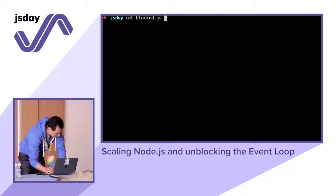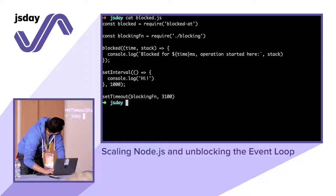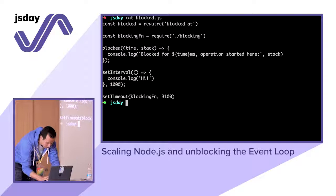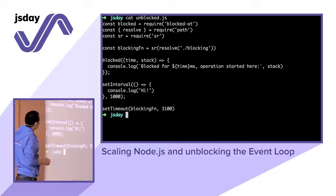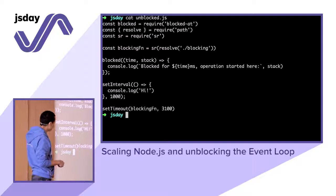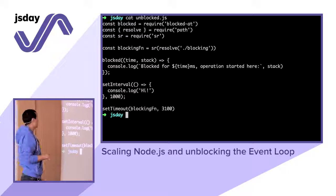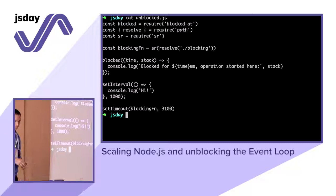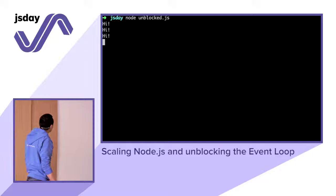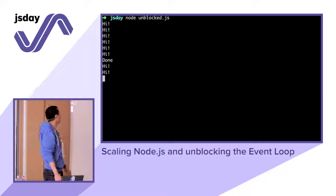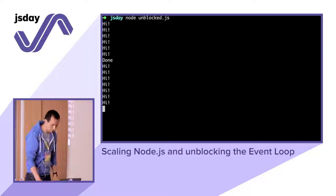Let me show a quick demo. We had a script that ran the blocking function with regular require. But now we're going to require it with super-require, resolving the exact file location. We still have the interval of 'hi' every second and the Block.That callback. When we execute it: hi, hi, hi, hi — we continue to receive our his because it's not blocked at all. Then it's done. There's no blockage. Everything is working as it's supposed to.